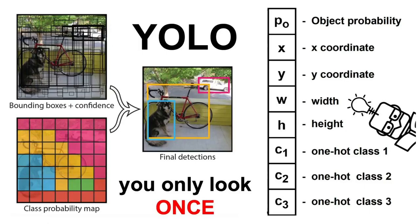Hi everyone, this is YML and welcome to the fifth part in the object detection series. In this video, we are going to study the You Only Look Once, or YOLO in short, architecture, which has become one of the most — if not the most — popular architecture in object detection. It is also one of my personal favorites due to its simplicity, low latency, and high performance on many object detection datasets.